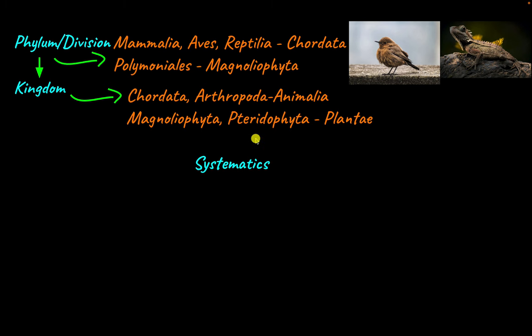Taxonomy is also used in the field of systematics. Systematics uses taxonomy to understand the evolutionary history of organisms and the evolutionary relationships between them. More recently, systematics has expanded into a field that also includes identifying, describing, and classifying different organisms.